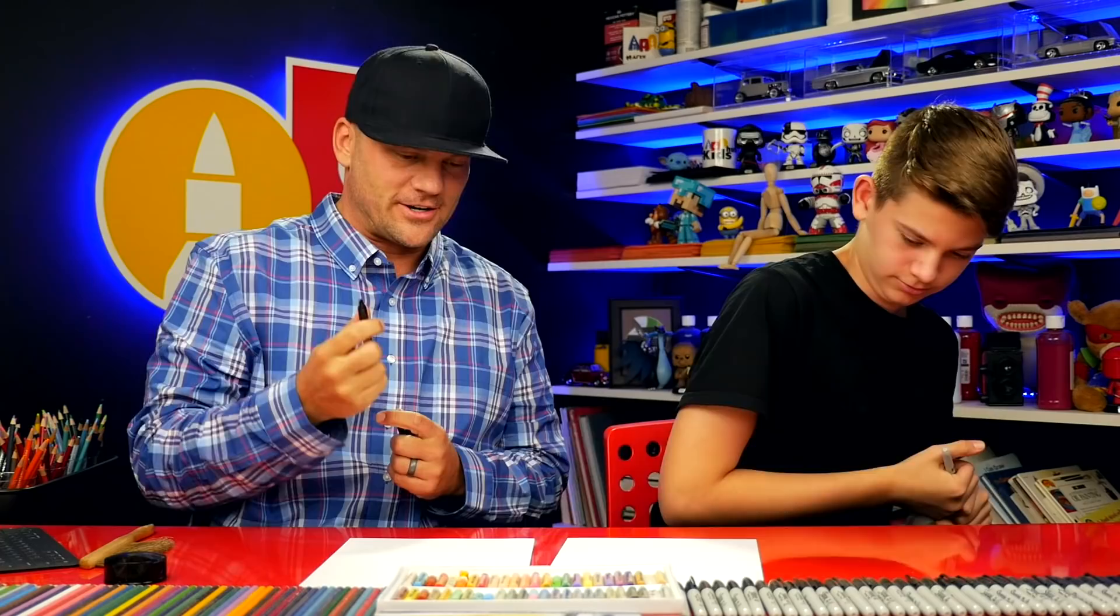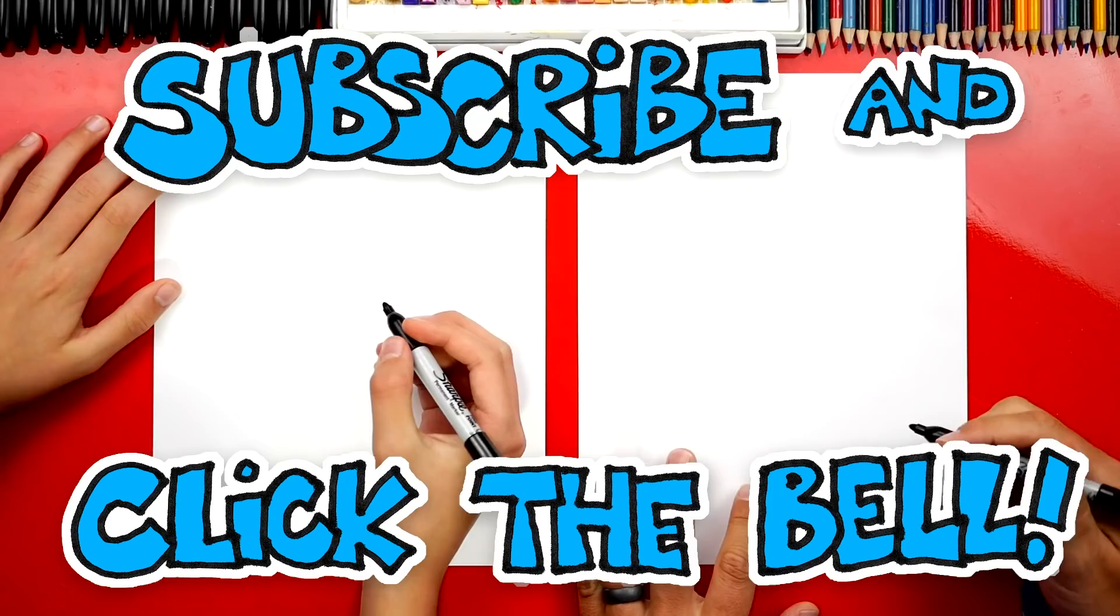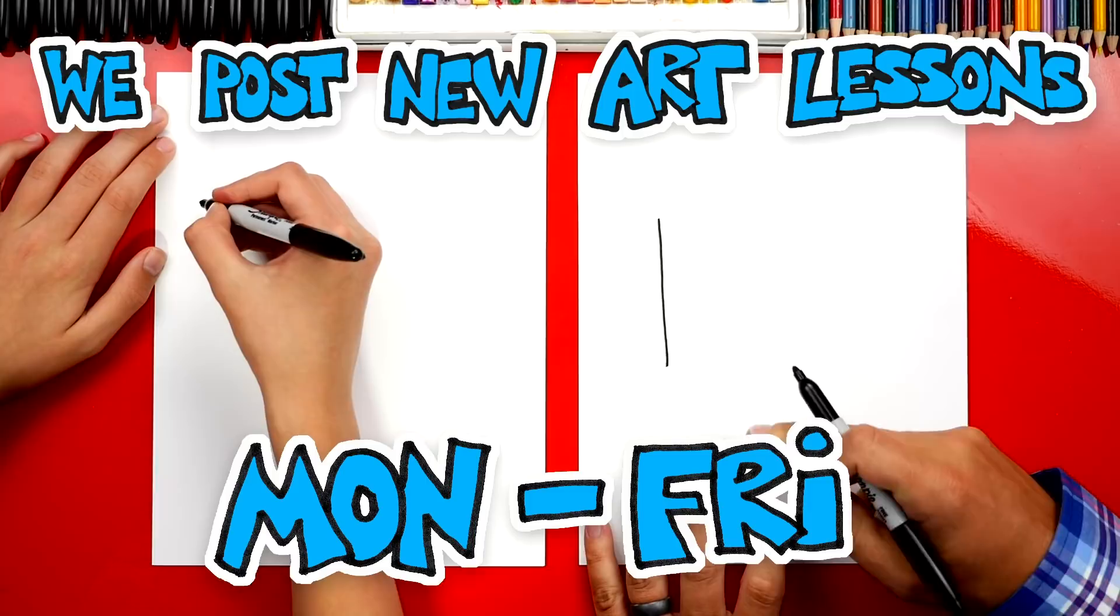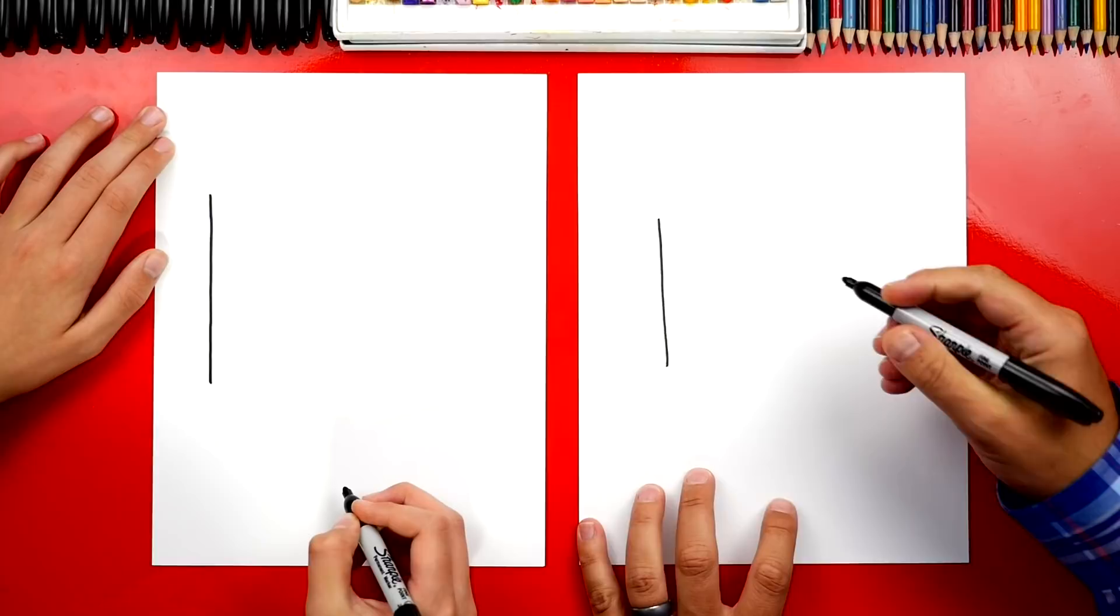We're first gonna draw two lines down the middle of our, well let's draw them off to the left so that we have room for the toe. We're gonna draw a line over here. The toe. Yeah, toes. The toe of the sock. And we're gonna draw another line right next to it. Well, a little further over than right next to it, but it matches.